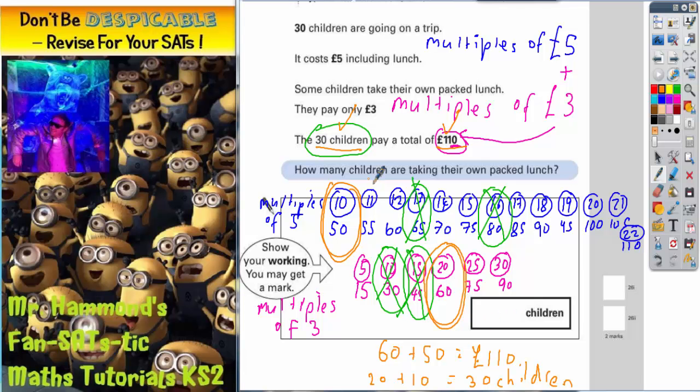So what we need to do now is double check what we've been asked for to write in the answer box. It says how many children are taking their own packed lunch. Well, the packed lunch people are the people that are paying three pounds. So if we check the multiples of three, we've gone for 60 pounds, and that's from 20 children. So the answer that we need to write in here is 20 children. We should just do a quick double check. We're saying that 20 children take their own packed lunch. That's 20 lots of three pounds, which is 60 pounds. And we're saying that the rest of the children, which must be 10, because 10 plus 20 makes 30 children, are paying the full price, which is five pounds, and 10 lots of five pounds is 50 pounds. Put your two costs together, 50 pounds and 60 pounds does indeed make the 110 pounds. So 20 children has to be correct.